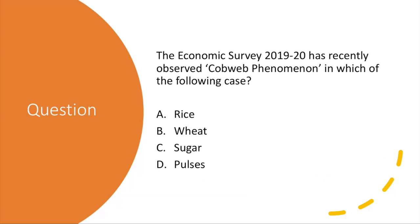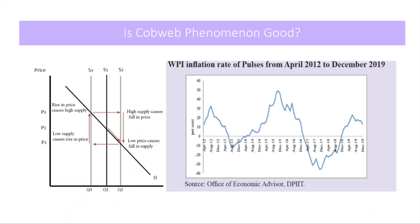Quiz question: The Economic Survey 2019-20 has recently observed the Cobweb phenomenon in which of the following? Rice, wheat, sugar, or pulses? The answer is pulses.